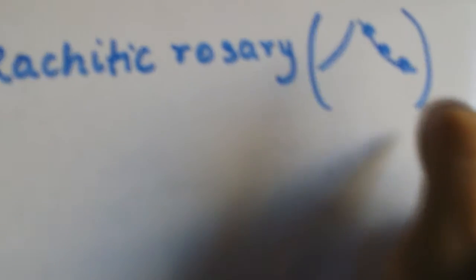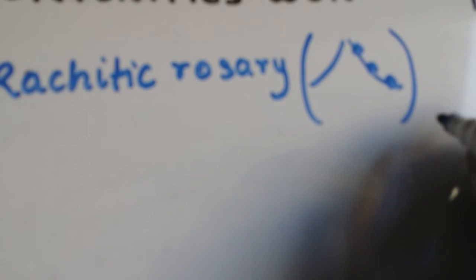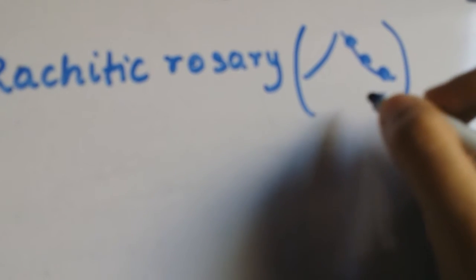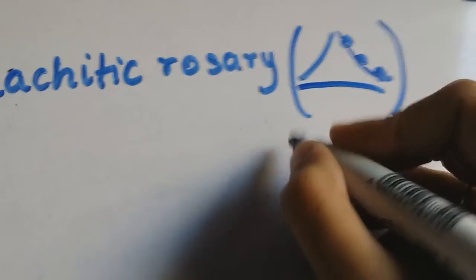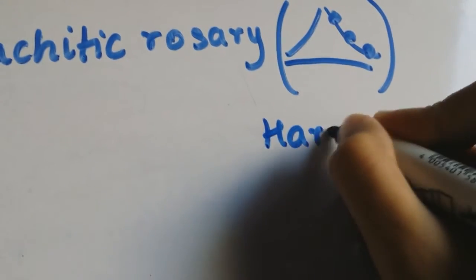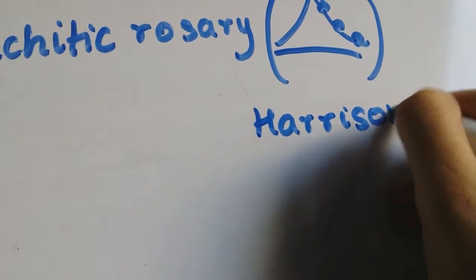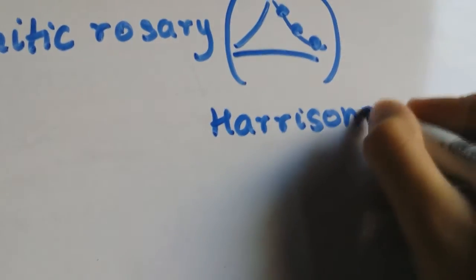There are two more things in the chest that patients with Rickets have. The second thing is the Harrison sulcus and it is a depression in the lower part of the chest which corresponds to the insertion of the diaphragm.